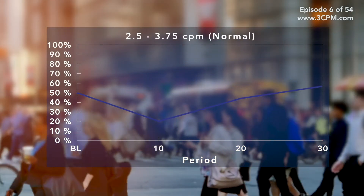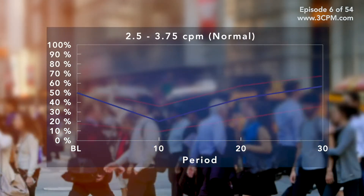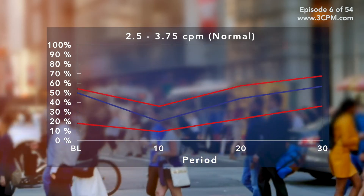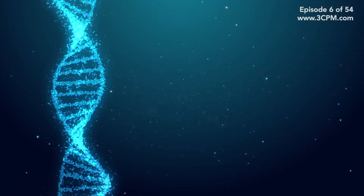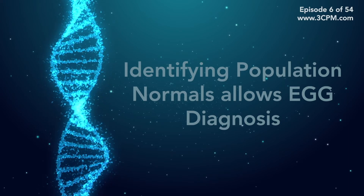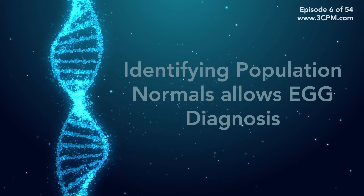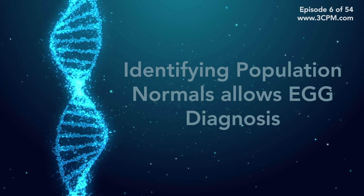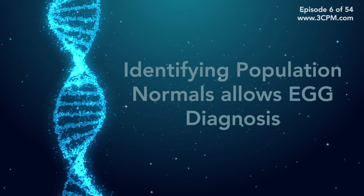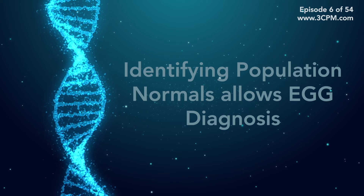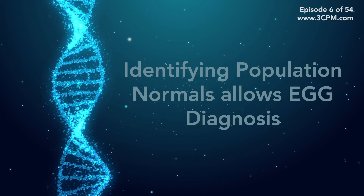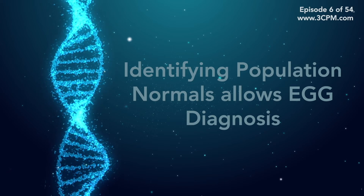At this juncture, all that remained was to determine normal values in the population. Join us in our next installment, when we will explore how the introduction of population normal ranges allows physicians to subtype the EGG signal in order to identify unique disease-related results, sparking the beginning of how EGG demonstrates not only homeostasis of gastrointestinal motility, but also when homeostasis is disrupted leading to disease.